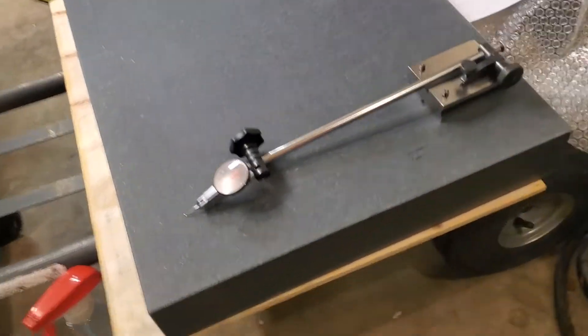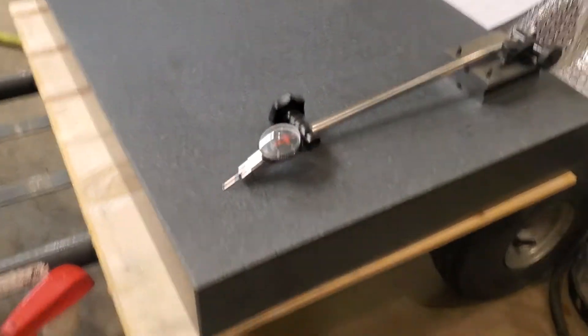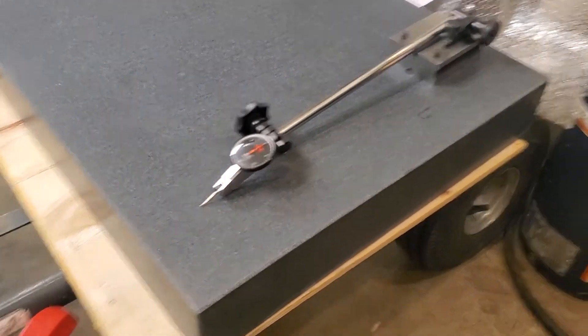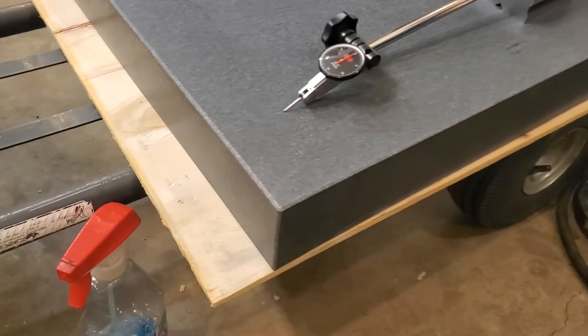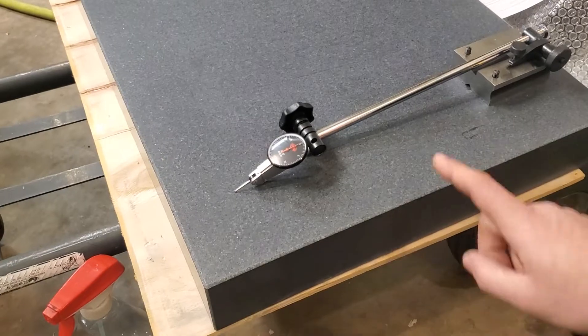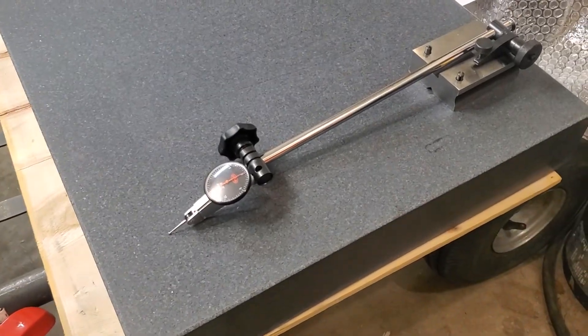All right, so I just got this granite surface plate that I bought on Amazon from a company called HHIP. They sell a bunch of machining stuff fairly cheaply. This is an 18 by 24 by 3 inch thick. It's supposed to be a grade A surface plate.